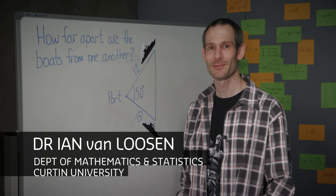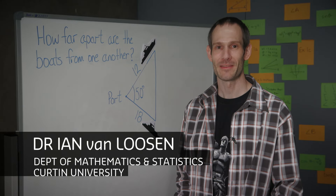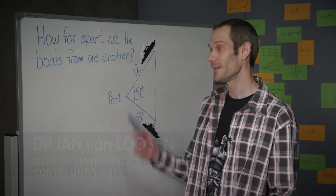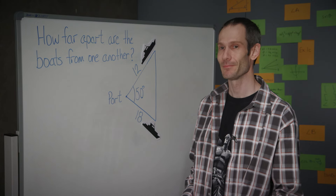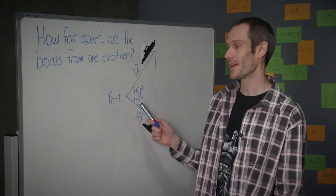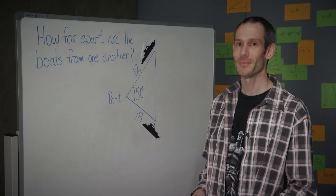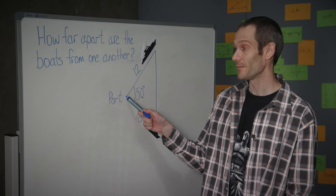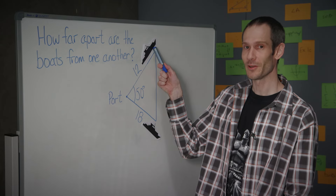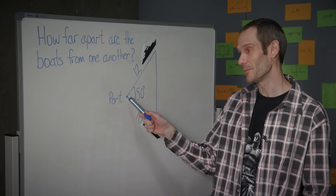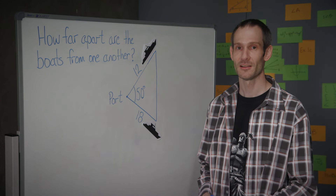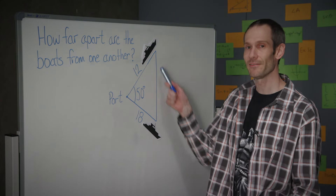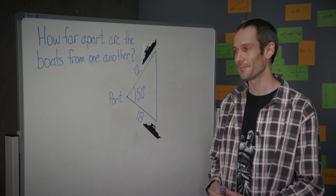Hi, I'm Dr Ian Van Luschen from the Department of Mathematics and Statistics at Curtin University. Let's consider the following situation: two boats leave a port at the same time, deviating away from each other at an angle of 50 degrees. The first boat moves a total distance of 12km, the other boat moves a total distance of 18km. What we would like to know is how far those boats are away from each other.